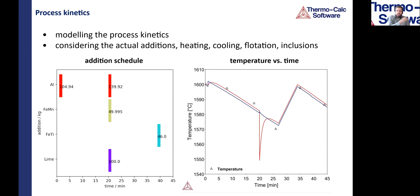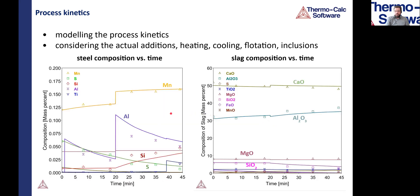We are not only interested in equilibrium but also in process kinetics, which we can simulate with the Process Metallurgy module. Here we see the same steel and ladle furnace process in a kinetic simulation with a process schedule. We see a nice fit for the temperature evolution over time compared to measured data, and also for the steel and slag composition over time. The aluminum content is reduced throughout the process, and we get a quite nice fit there as well, showing the strong influence of kinetics.